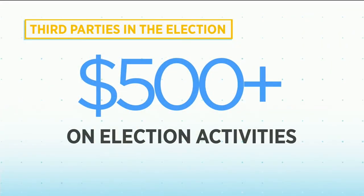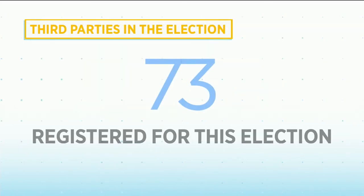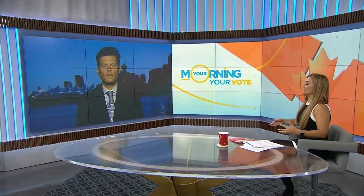We are in the thick of a campaign season and political parties are not the only ones at work. Anyone who spends more than $500 on election-related activities must register with Elections Canada as a third party. Currently there are 73 third-party groups registered this election cycle. For more on what they can and cannot do during an election, we are joined by lawyer and author of the Democracy Law blog, Clayton Whitman. Let's break it down — what are these third-party groups and what can they do?